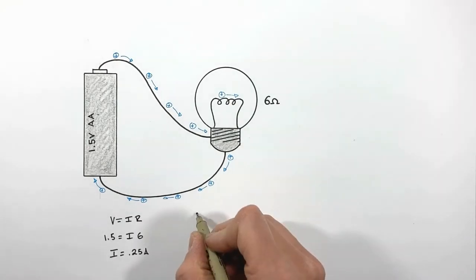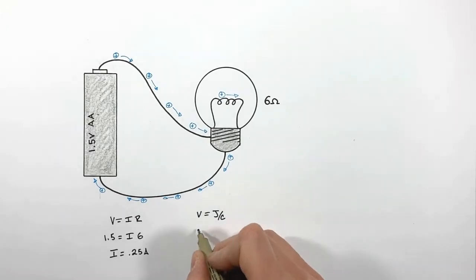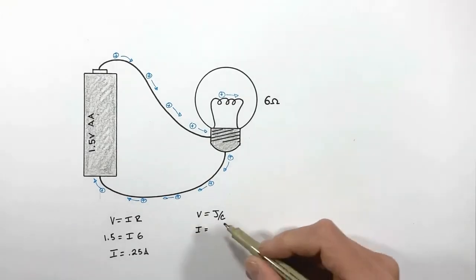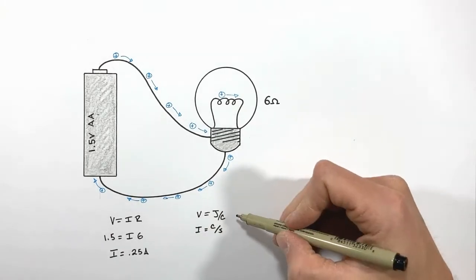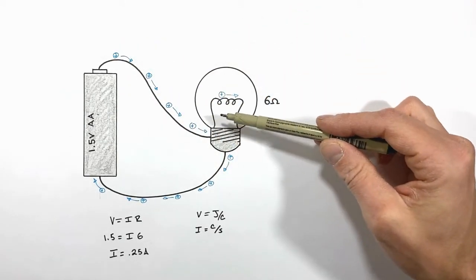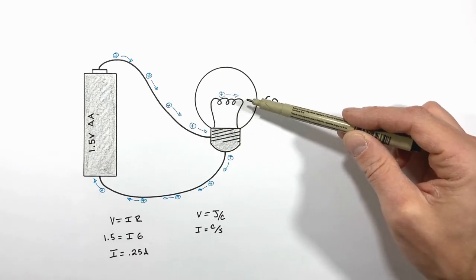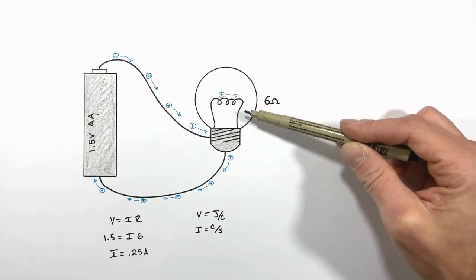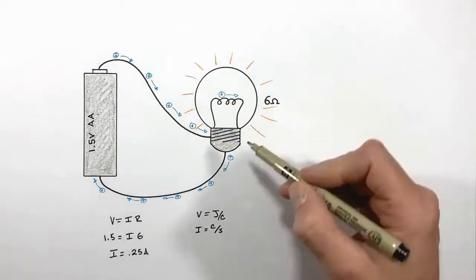Remember, voltage is a joule per coulomb, and current, which we measure in amps, can actually be referred to as coulombs per second. So in actuality what's happening here is the battery is providing the charge with some energy, and the charges are then giving that energy or using that energy up in the light bulb, causing the light bulb to both heat up and give off light.